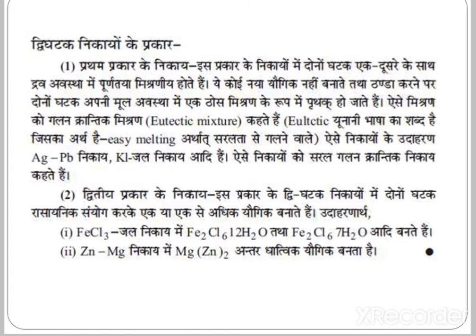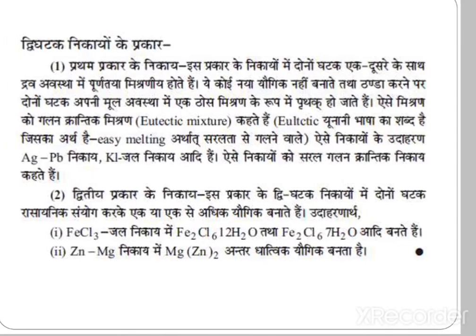Compound-forming two-component systems: in these systems, both components react chemically to form one or more compounds. For example, in the FeCl3-water system, Fe2Cl6·12H2O and Fe2Cl6·7H2O are formed. In the zinc-magnesium system, MgZn2 is formed as an intermetallic compound.